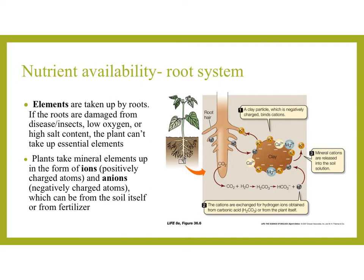Elements are taken up by the roots. If the roots are damaged from disease or insects, low oxygen, or high salt content, the plants can't take up the essential elements. Plants take mineral elements up in the form of ions — cations, which are positively charged atoms, and anions, which are negatively charged atoms — which can be from the soil itself or from fertilizer that has been added to the soil.